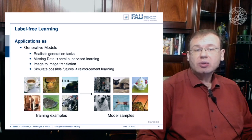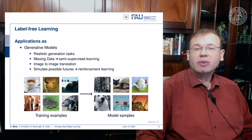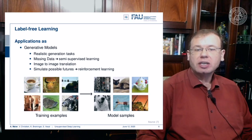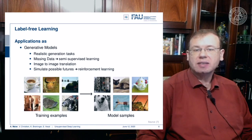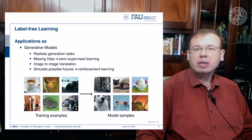You can also simulate possible futures — for example, in reinforcement learning. There are all kinds of interesting domains where we could apply these unsupervised techniques. As an example for generation, you train with the left-hand side images and then generate new images on the right-hand side, producing images that look like real observations.